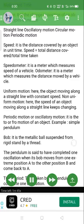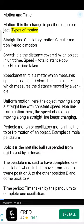Motion and Time. Motion, it is the change in position of an object. Types of motion: straight line, oscillatory motion, circular motion, periodic motion.